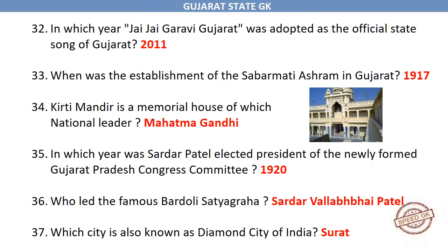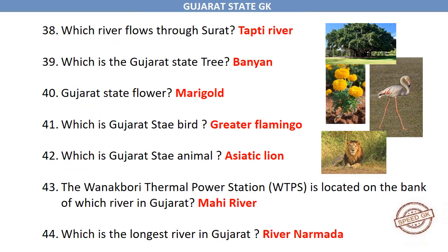In which year was Sardar Patel elected president of the newly formed Gujarat Pradesh Congress Committee? 1920. Who led the famous Bardoli Satyagraha? Sardar Vallabhbhai Patel. Which city is also known as the Diamond City of India? Surat. Which river flows through Surat? Tapti River.